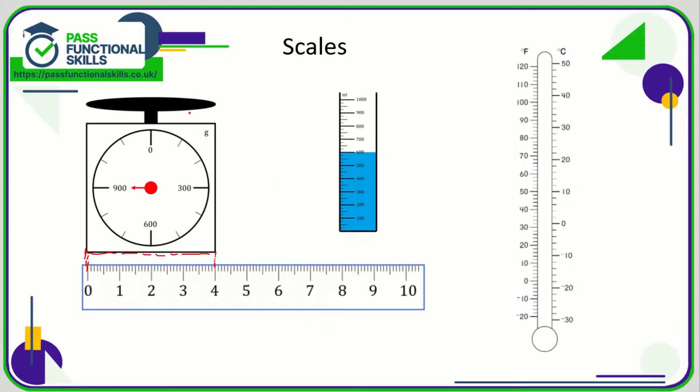For measuring weights, you might have to read a set of scales, and again it should be fairly obvious what the scales read. So here you can see the arrow is pointing directly at the 900, so that is 900 grams. If the arrow was pointing here, again we just need to be very careful about the scale.